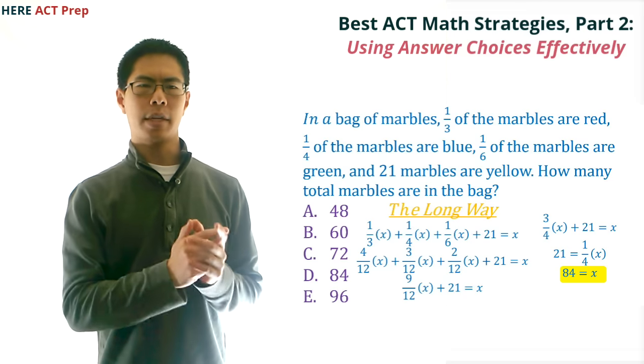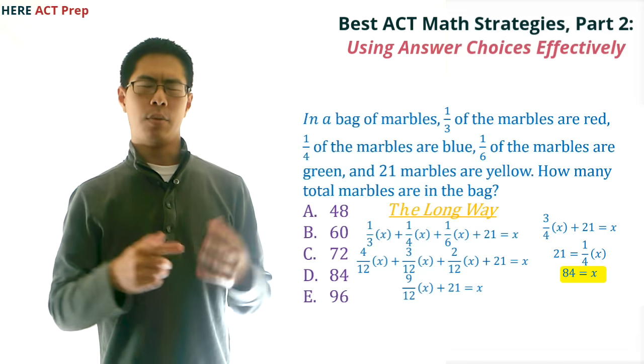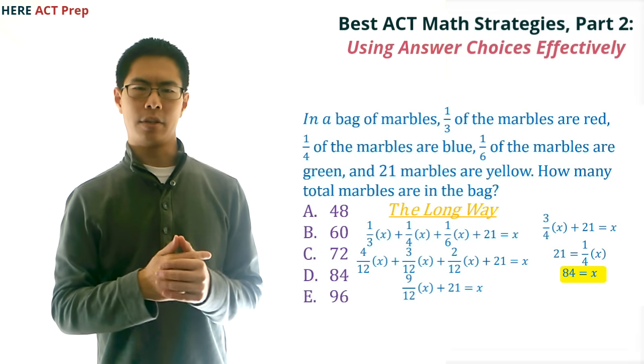And finally, we multiply both sides by 4 to get x = 84, which is our answer, but that took a lot longer than just using the answer choices.